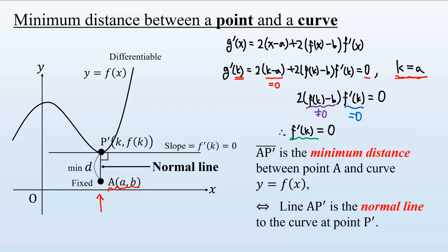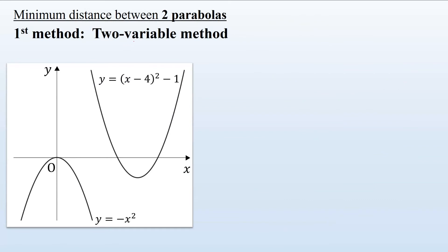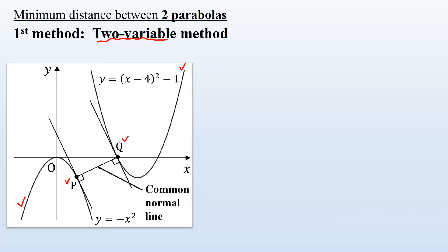Now let us apply this principle to our two-parabola problem. For the first method — the two-variable method — the distance between two parabolas can be expressed as the distance between points P and Q on each parabola. For this distance to be minimized, line PQ must be the normal line to the right parabola at Q, and also the normal line to the left parabola at P. Therefore, PQ must be the common normal line to the two parabolas.